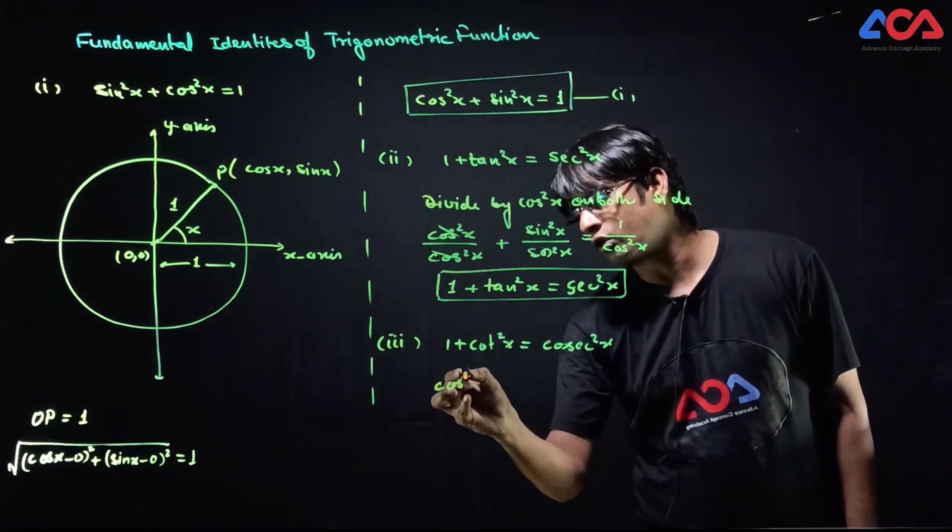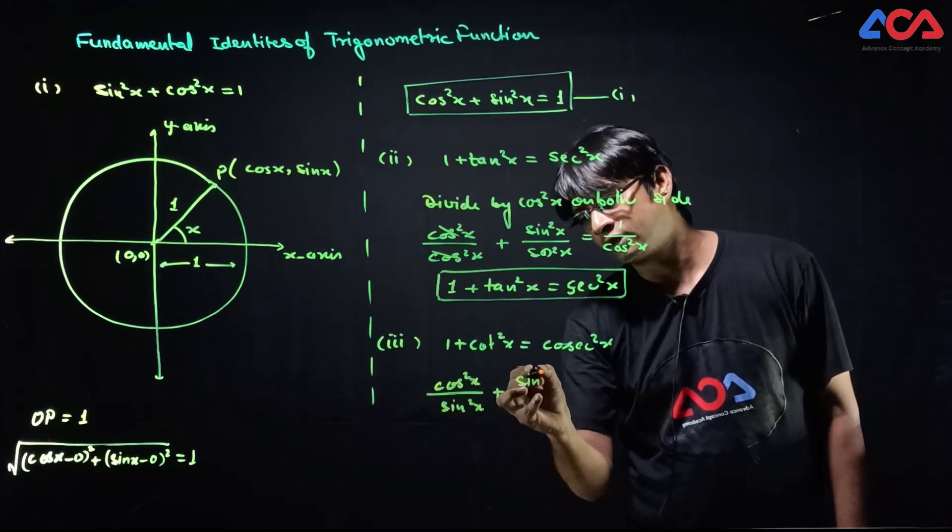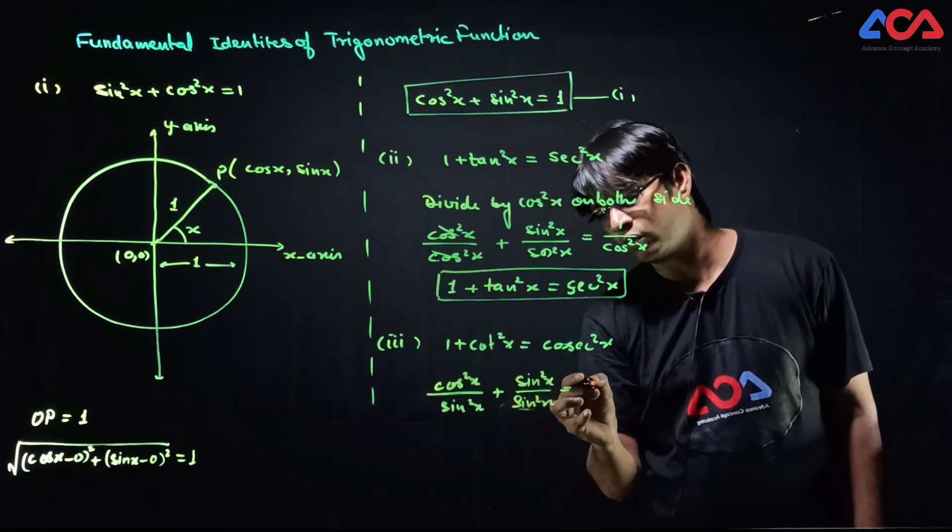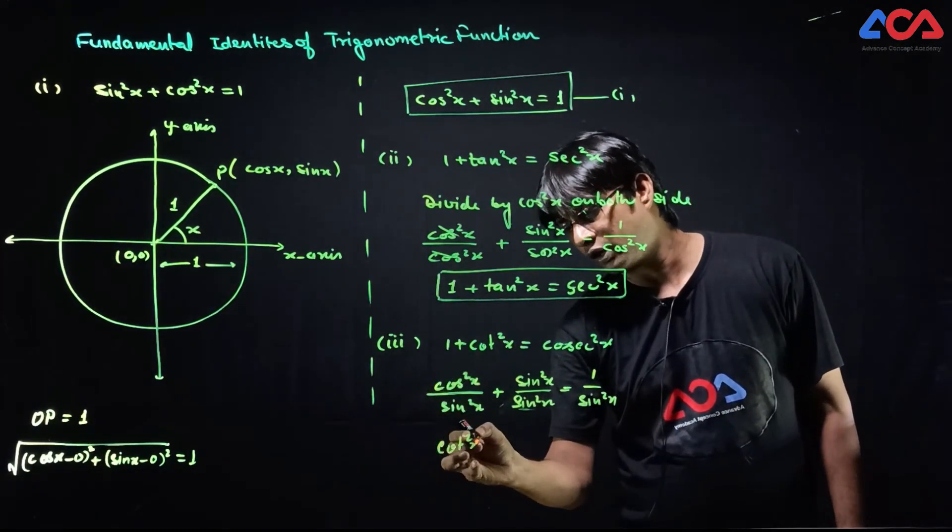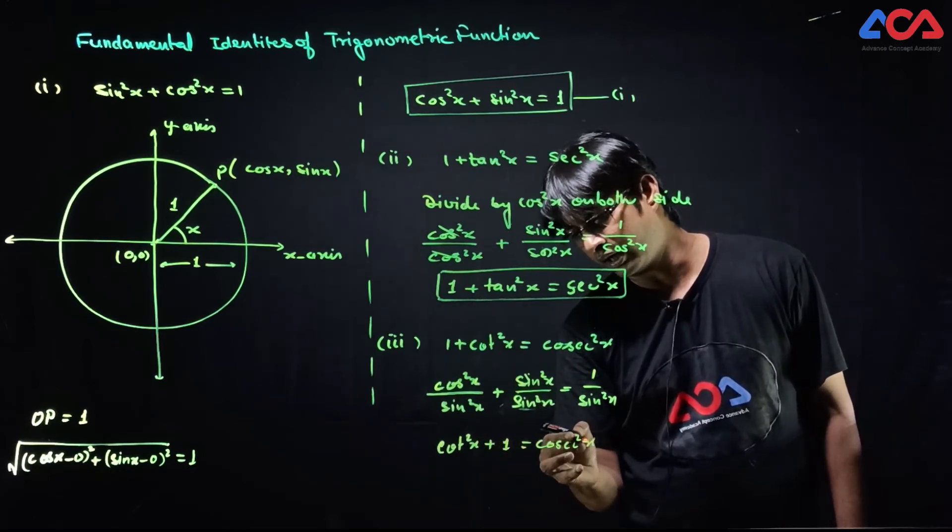Therefore, cos²x/sin²x + sin²x/sin²x = 1/sin²x, which simplifies to cot²x + 1 = csc²x. The third identity is proved.